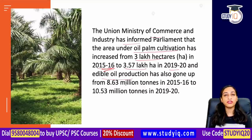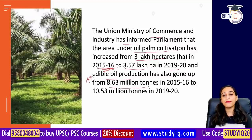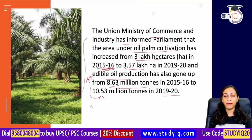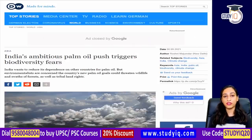If we talk about edible oil production, it also increased. It was 8.63 million tons in 2015-16, and now it has been 10.53 million tons in 2020. So this is your data — oil palm cultivation and edible oil production.